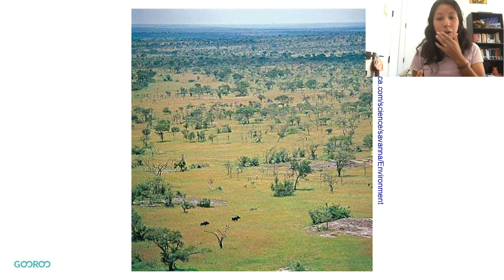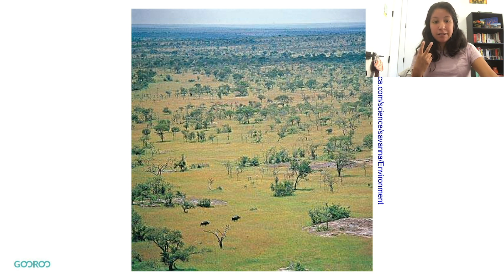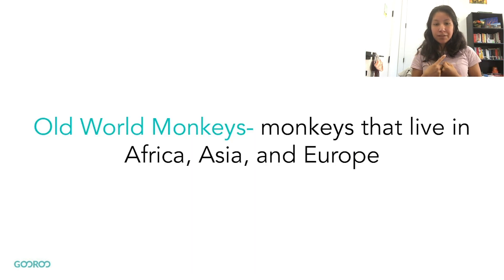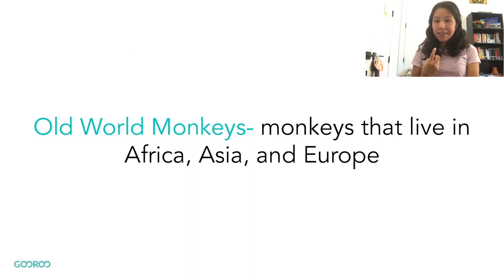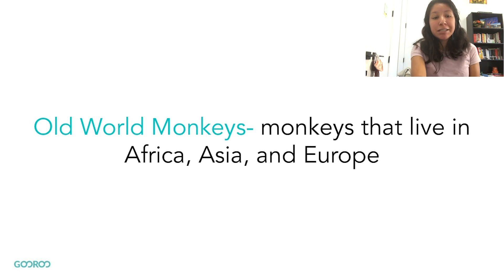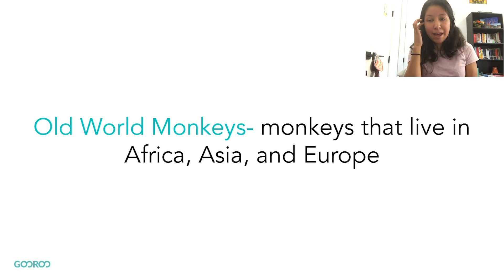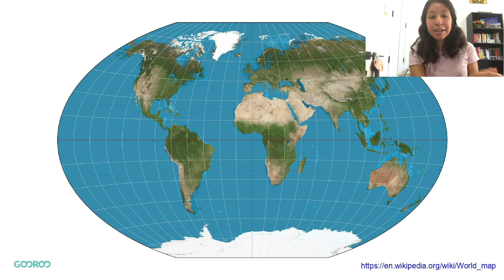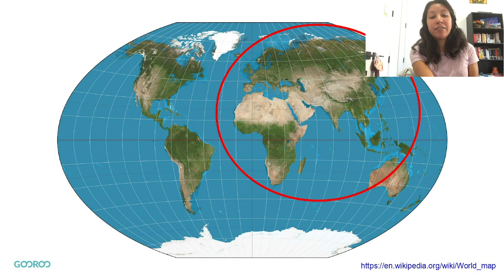We're going to talk about two main types of monkeys. The first is old world monkeys. Old world monkeys live in Africa, Asia, and Europe — so these are three continents. I'll pull up a world map here, and here's a picture of where old world monkeys live in Africa and in Asia.